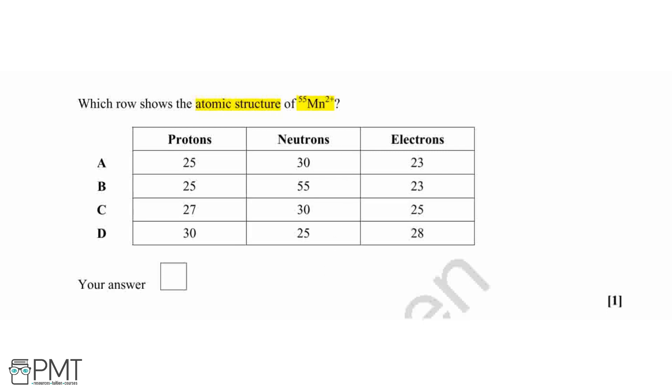So if we look in our periodic table, we can see that manganese has got an atomic number of 25. Therefore, that means the number of protons inside our manganese has got to be 25.